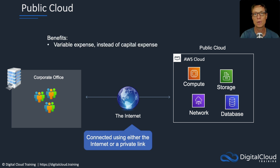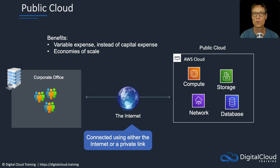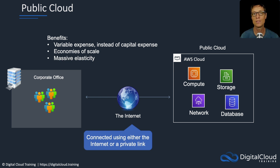The benefits of public cloud include variable expense — you're paying for usage rather than capital costs for private cloud infrastructure. You also get economies of scale, as public clouds like AWS, Azure, and Google are very large organizations with thousands of customers, which brings down costs. Additionally, you get massive elasticity, so you can ramp up services when needed — a major benefit for organizations that are growing fast or have very variable loads with extremely busy periods and then quiet periods, ensuring they can cater to customers at peak times without huge operating costs during slower periods.